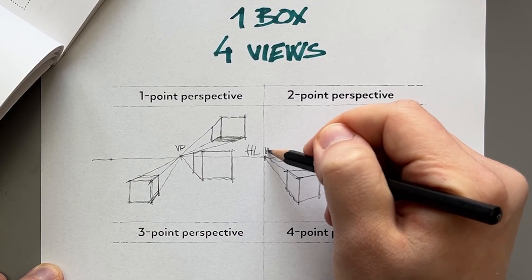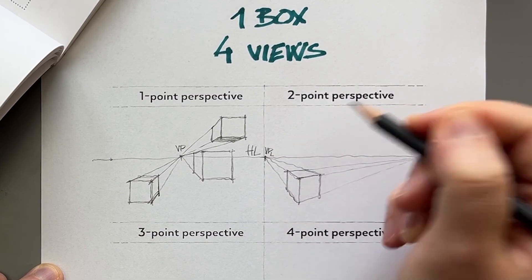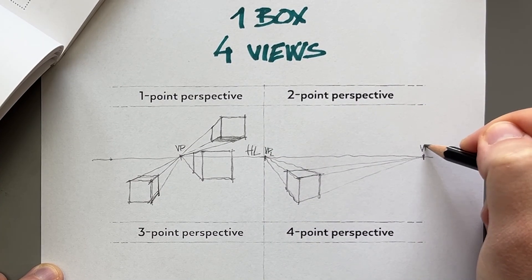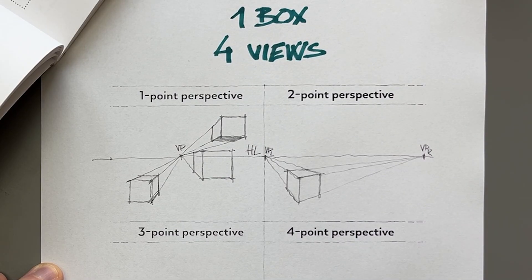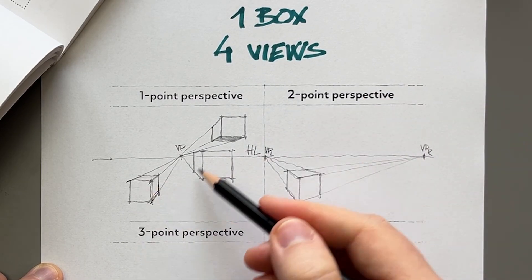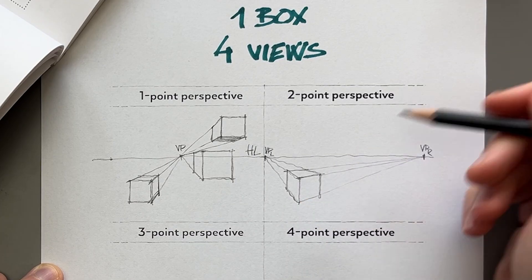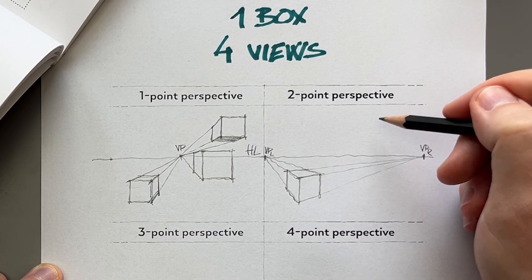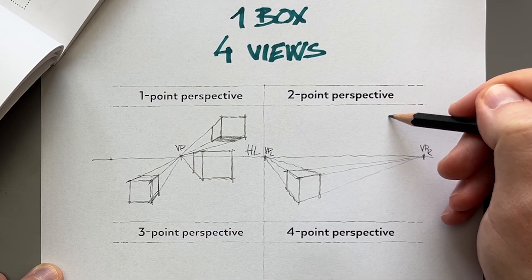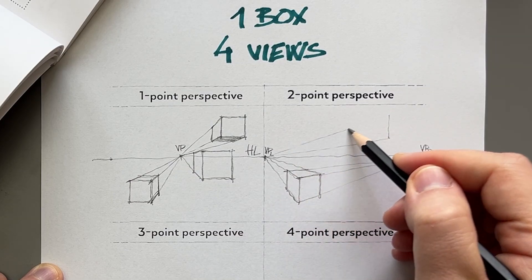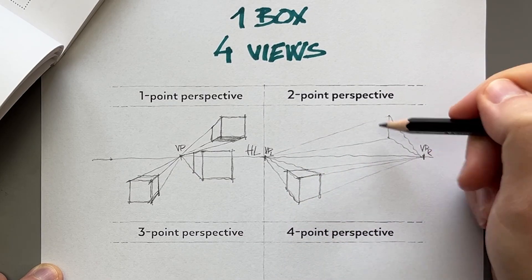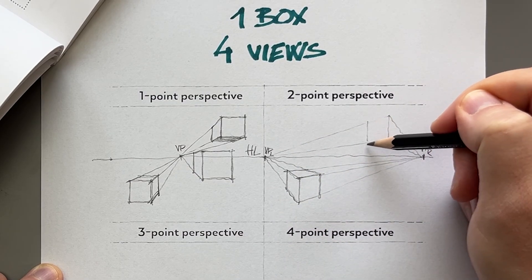This would be my VP left and VP right for vanishing points, and as you can see, this is a frontal view and this is a corner view. And again, I can draw the same box above the horizon line.